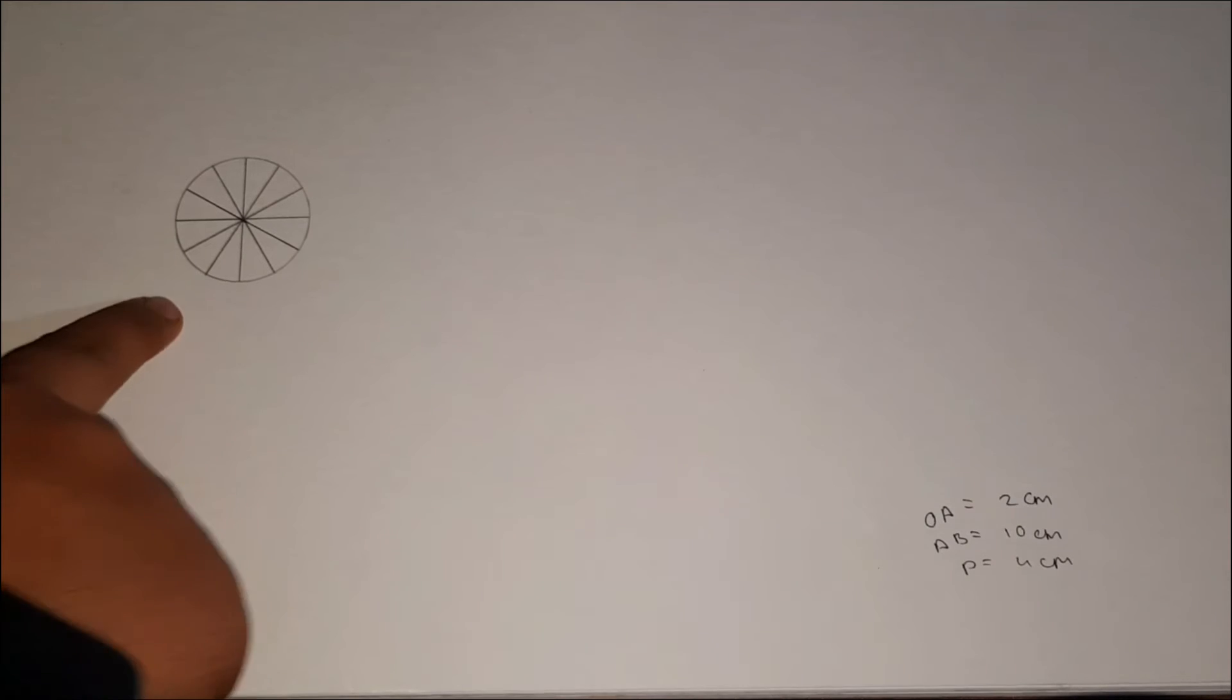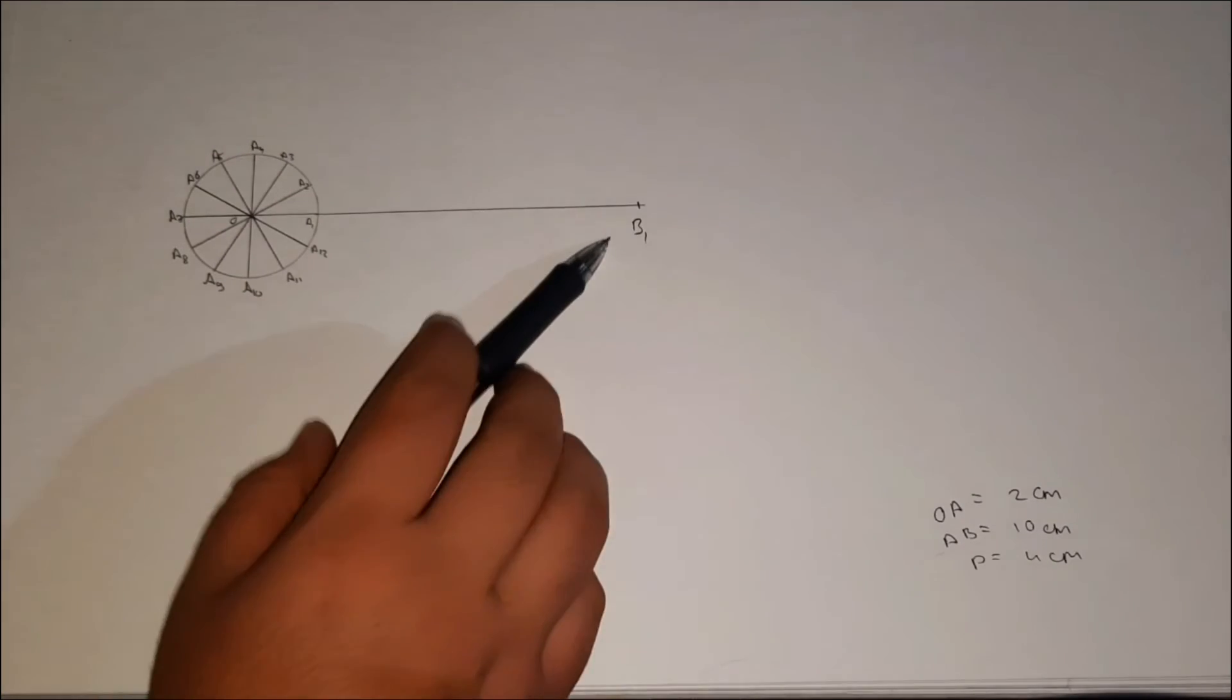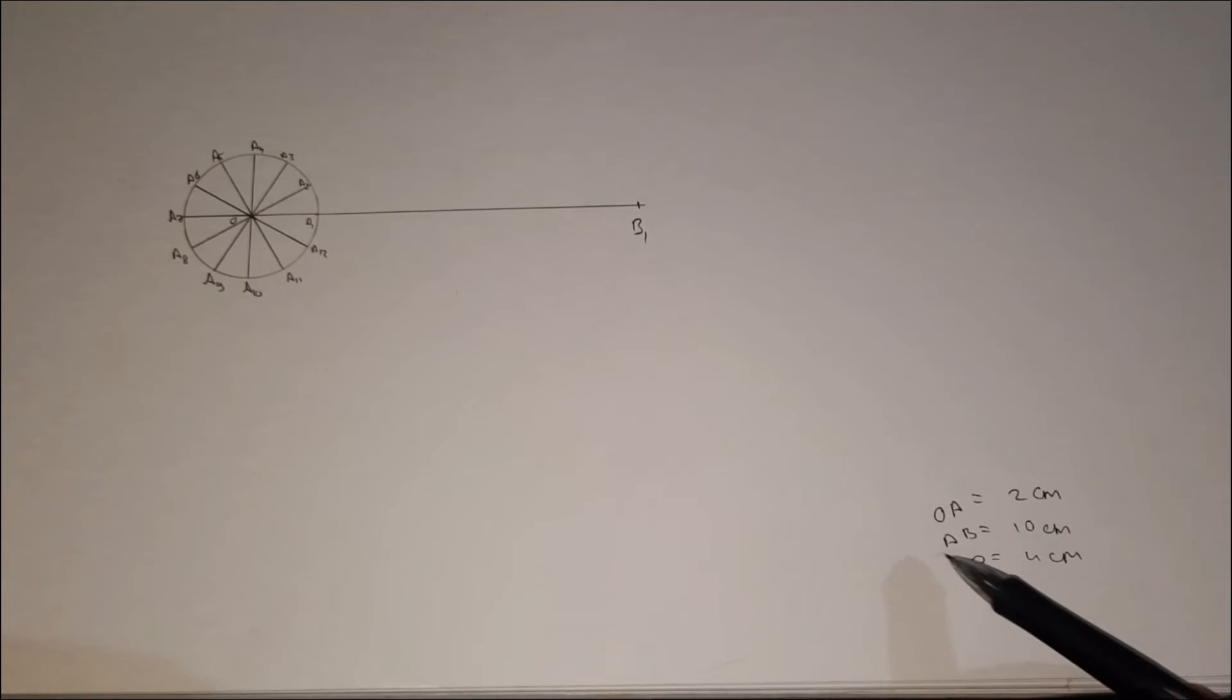This is the circle of radius 2 cm. Next step is to divide the circle into 12 equal parts. Here I have named the circle as A1, A2, A3 till A12. Now we will extend the radius over A1. Here I have taken the point B1 as it is given AB is 10 cm.